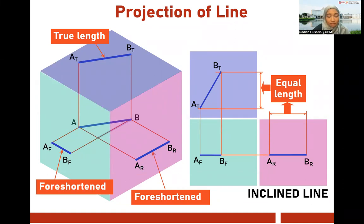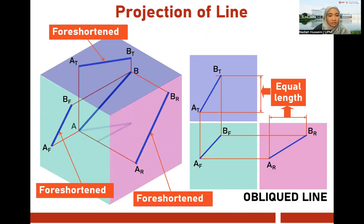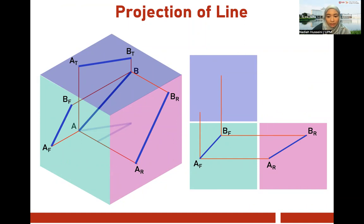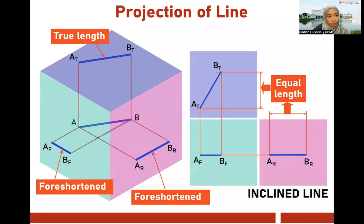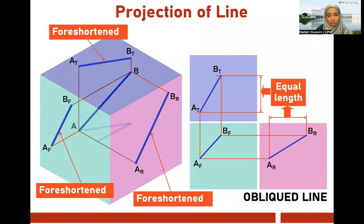To repeat: an inclined line means one plane tells you the true length. For an oblique line, all planes don't tell you the actual length. Terms you have to be familiar with: oblique, inclined, isometric, multi-view, inclined line, and oblique line.